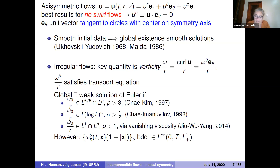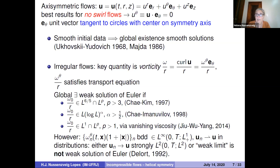An intriguing result was obtained by Delort for the axisymmetric analog of vortex sheets: if omega_0^n is bounded in L^1 with distinguished sign and the impulse is also bounded in L^1, and if the velocities converge in distributions, then either they converge strongly in L^2 or the weak limit is not a weak solution of the Euler equations. A key question is: where do helical flows sit among these results — closer to 2D or to axisymmetric?